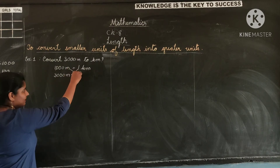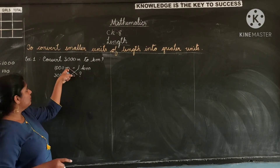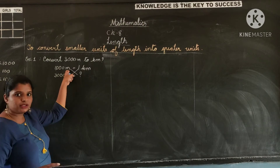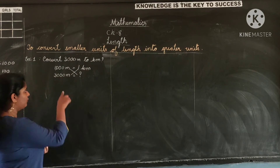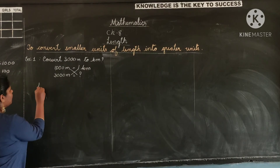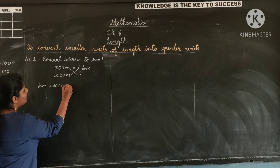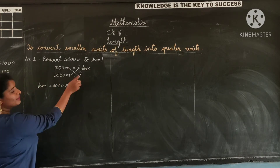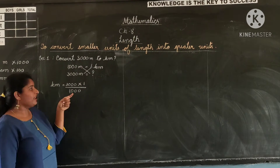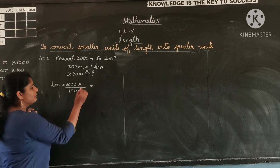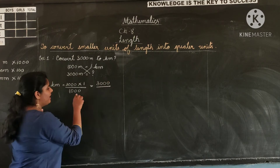We use cross-multiplication. Whenever you have a question mark, that value crossed with this number becomes the denominator. The other two numbers multiply each other. For example, kilometer is equal to 3000 into 1.